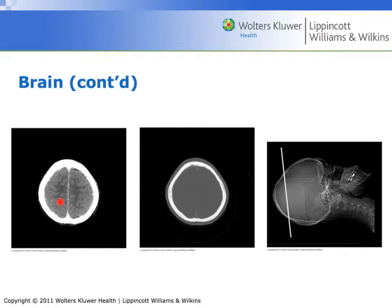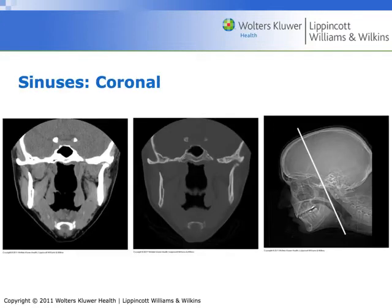Parietal lobe. Parietal bone. Temporal bone. This gray line out here is the scalp. Frontal bone. So that's the head — let's look now at the sinuses.